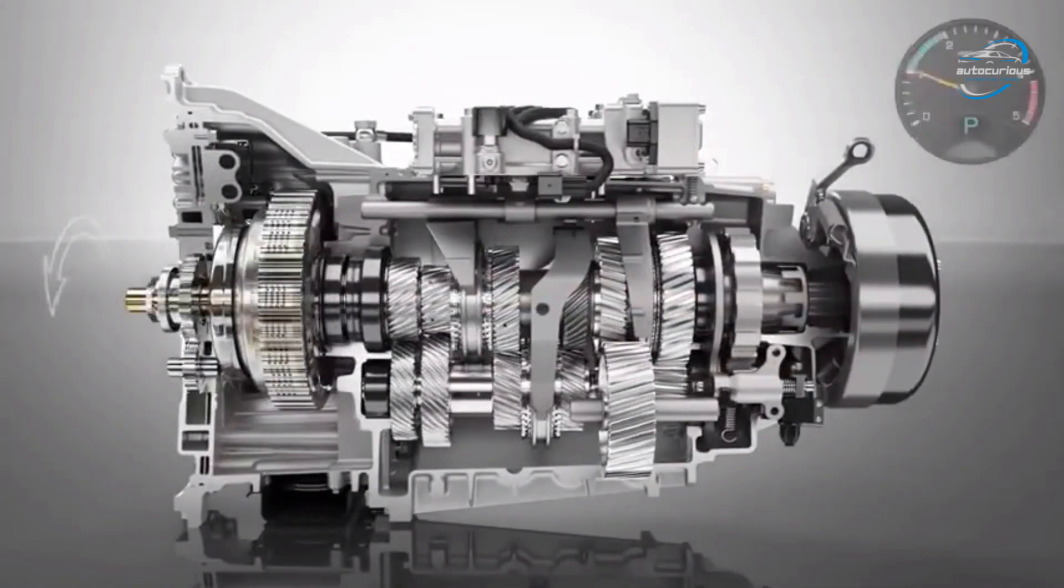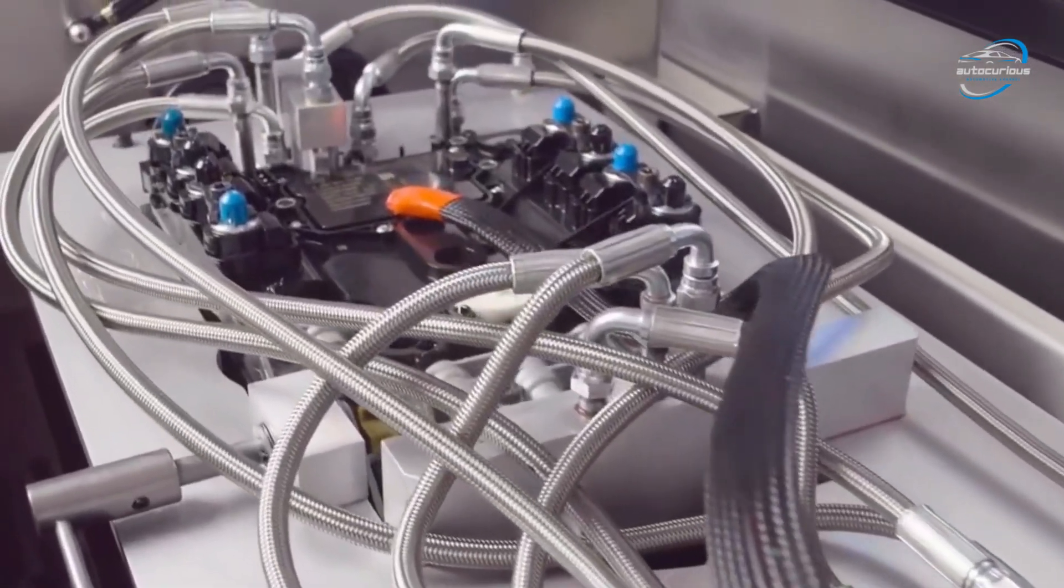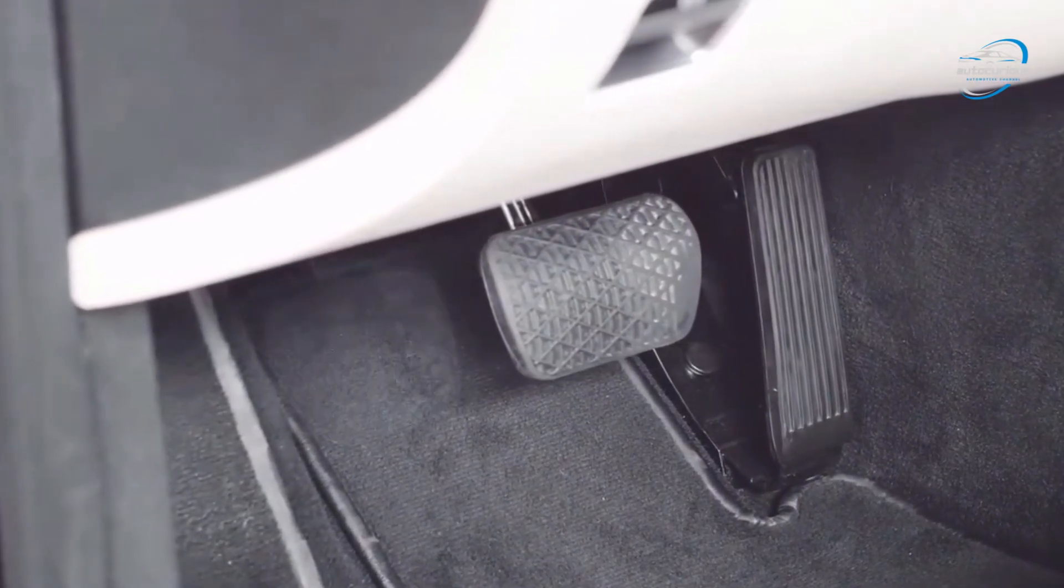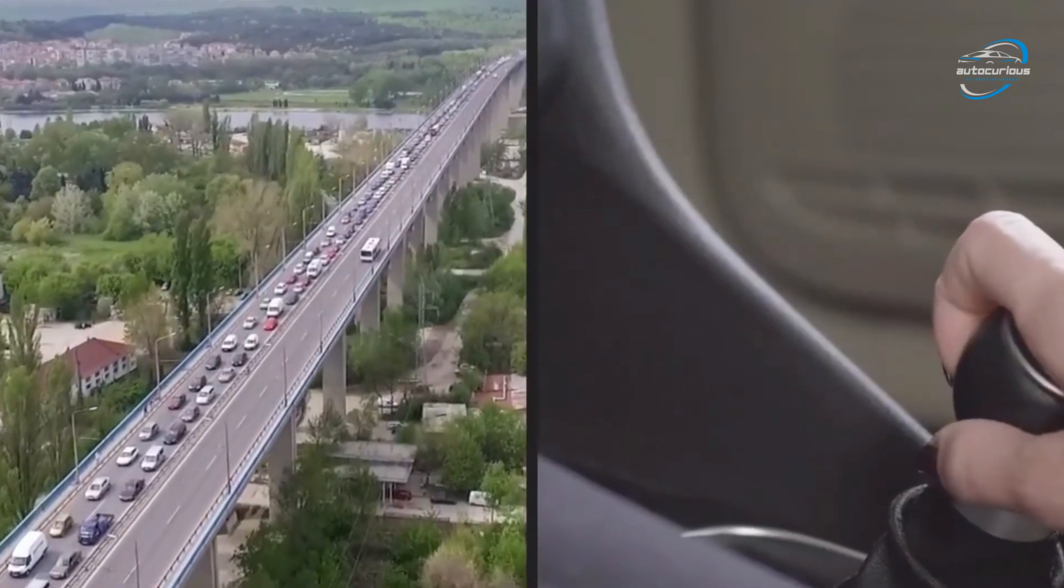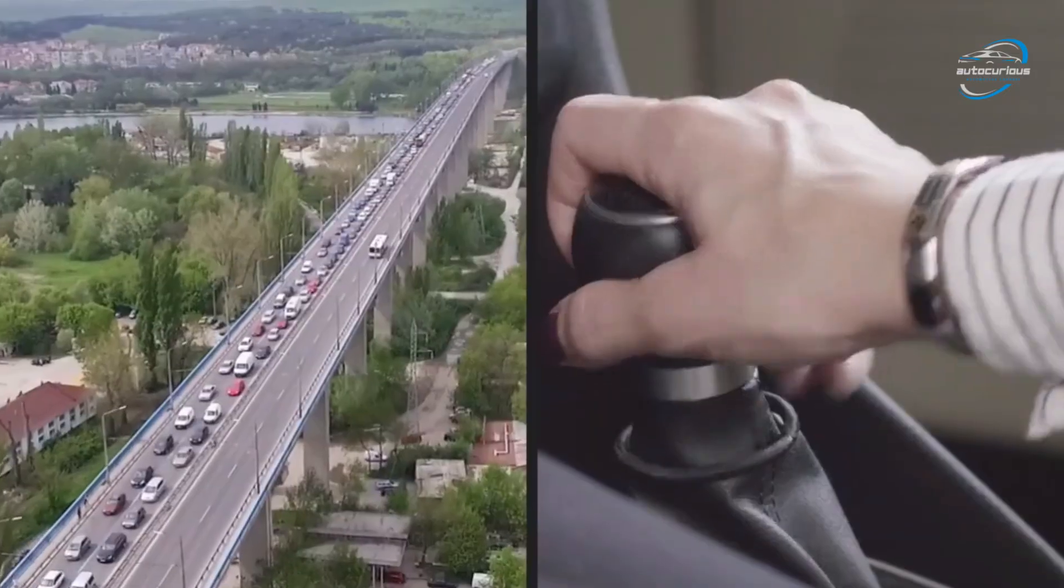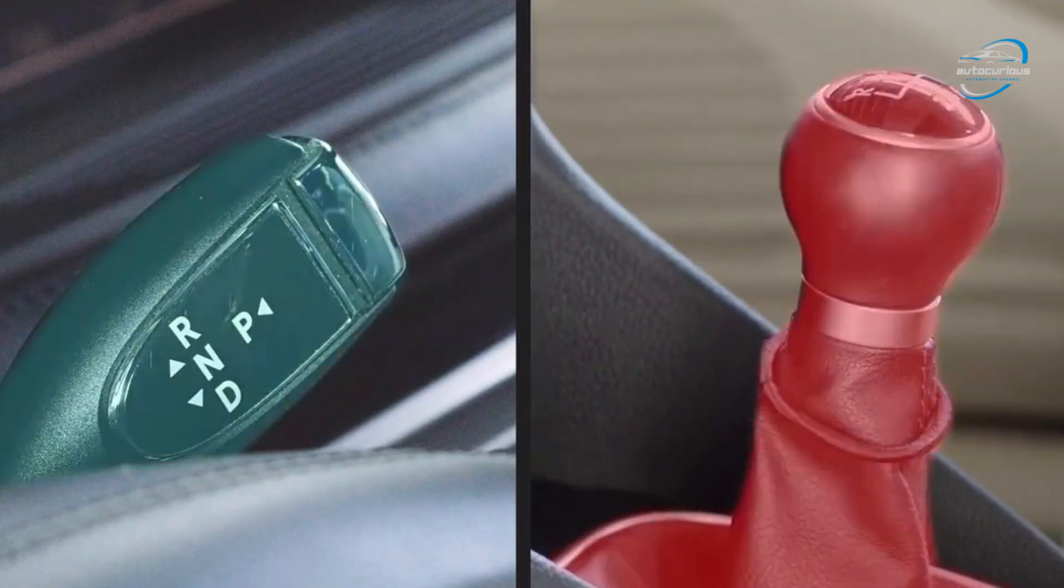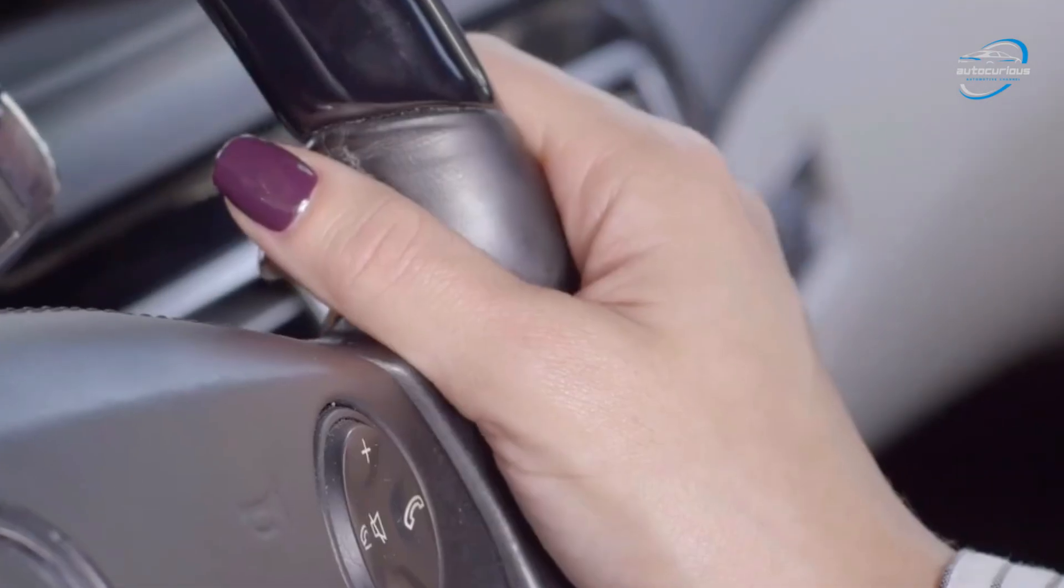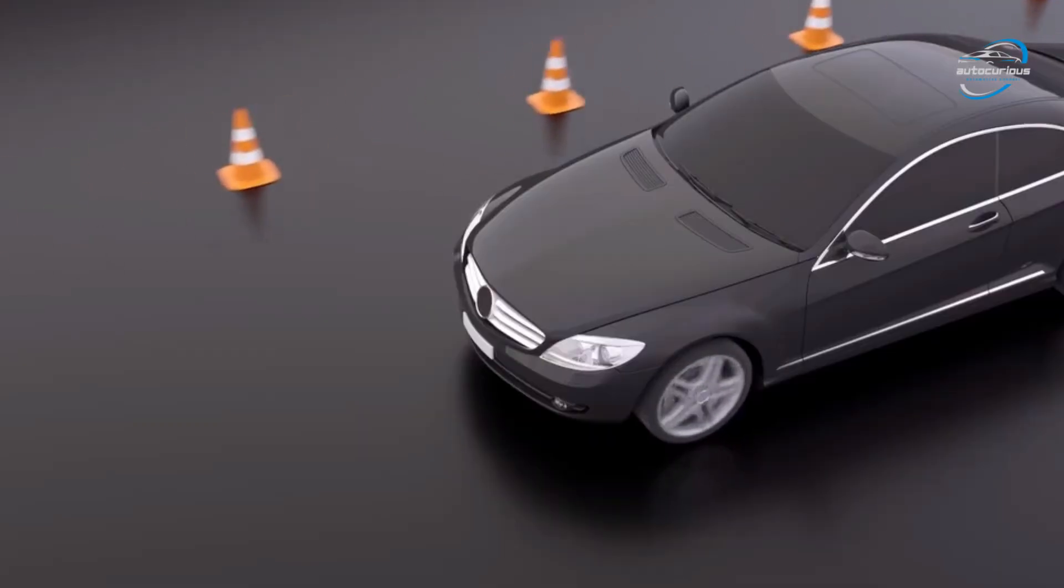Before we explore the types, let's get the basics. An automatic transmission is a system in your car that automatically changes gear ratios as the vehicle moves. So, you don't have to manually shift the gears like in a manual transmission. It ensures smooth acceleration, better fuel efficiency, and ease of driving, especially in traffic. Now, not all automatic cars are built the same. Different car makers use different technologies, and each type comes with its own pros and cons. Let's break them down.